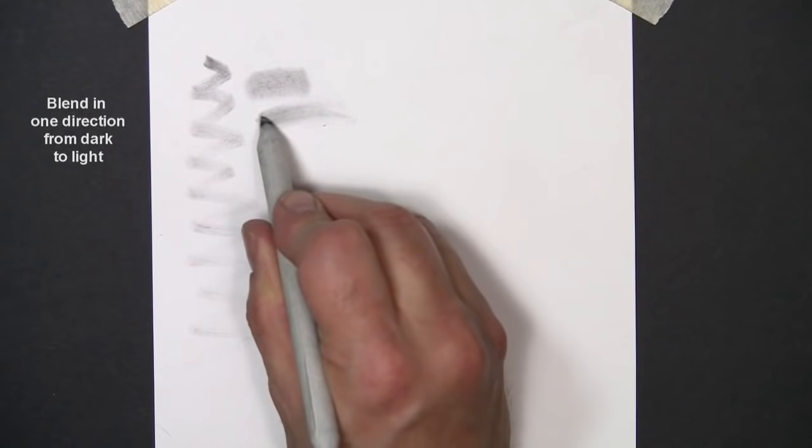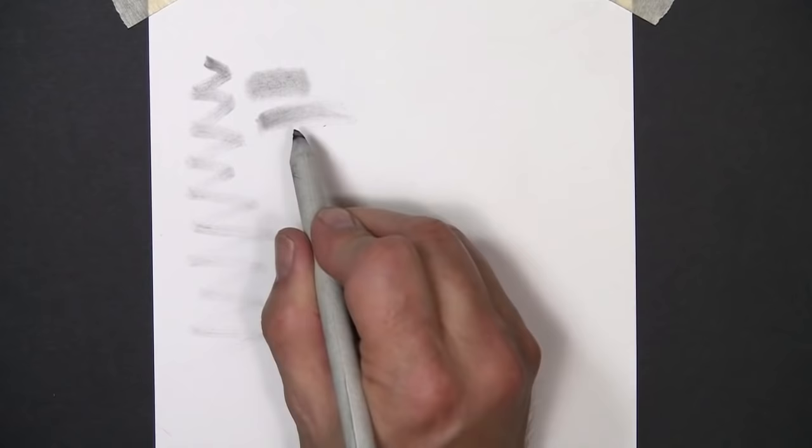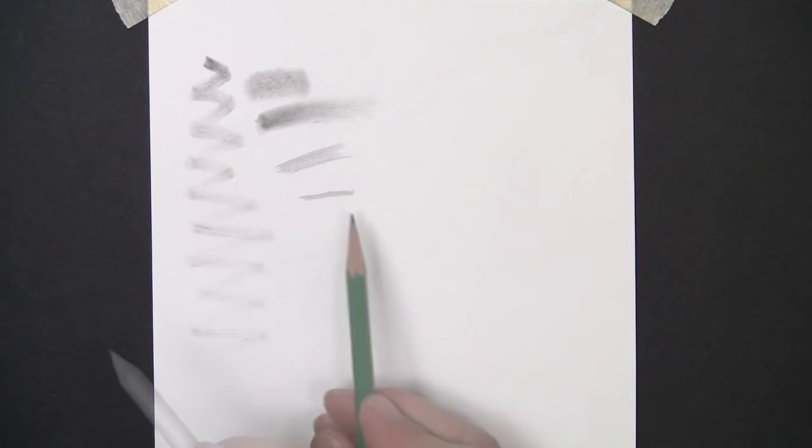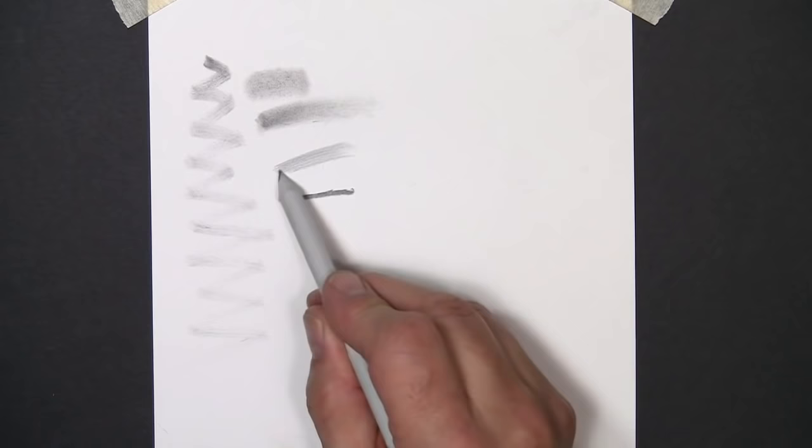If I was to use back and forth strokes, the area over here on the right is going to be just as dark as the area on the left. People use blending also if you have pencil lines on your paper and you want to blend them away. I also just go in one direction with those as well, and the most important thing is to use a light touch.